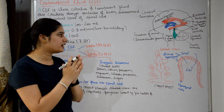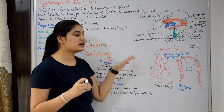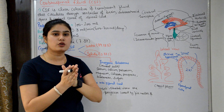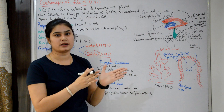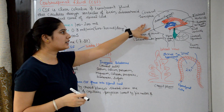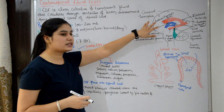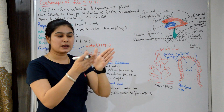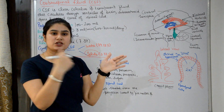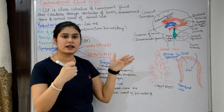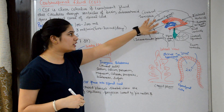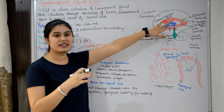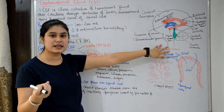Now let's look at the functions of CSF. Why is cerebrospinal fluid present in the brain and spinal cord? The first function is protection: CSF acts as a shock absorber between the skull and the brain. If the skull is hit, the CSF absorbs the shock and prevents the brain from being injured. The same protective function applies to the spinal cord.